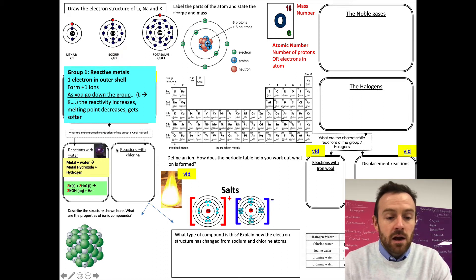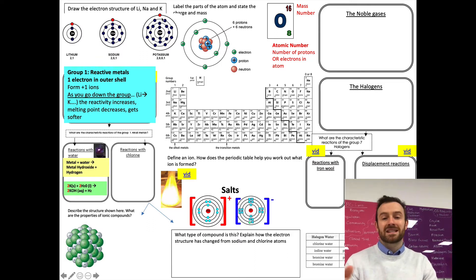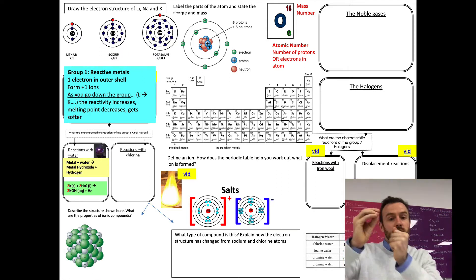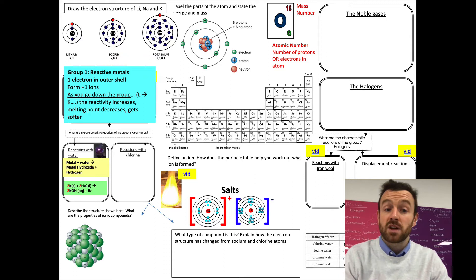So why does this reactivity increase as you go down the group? Well, we have to look back over here and we look at the electrons. So this electron here with lithium, its outer shell electron is quite close to the nucleus. Whereas if we go to potassium, the outer shell electron is quite far from the nucleus, which means it can be lost more easily. It doesn't feel that attraction from the positive nucleus as much. So it can be lost more easily when it forms an ion. And that basically means that it's more reactive.